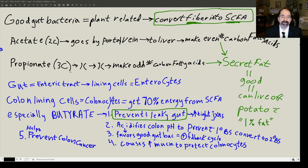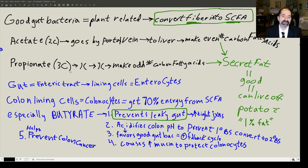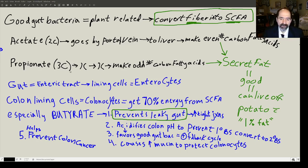Butyrate also helps maintain an acidic pH in the colon, which favors good gut bacteria. It helps prevent the bile salts — these cholesterol-like molecules released by the liver to help digest fats — from sitting around in the colon. If you have an acidic pH, you'll defecate them out before they cause any problem. Without acidic colon pH, they get converted to secondary bile salts which increase the risk of cancer. Butyrate also helps reduce the risk of colon cancer and promotes increased mucin formation — the mucus that coats and protects the colonocytes.